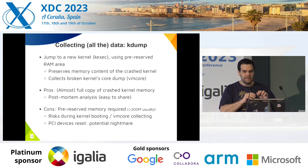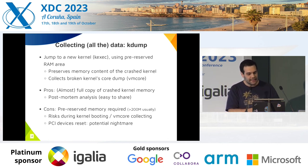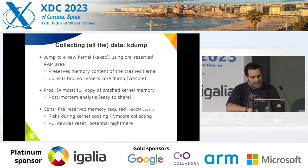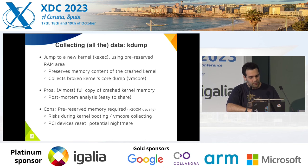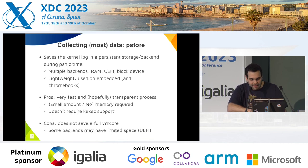K-dump is the first one. The broken kernel jumps to another kernel that collects the full memory of the first kernel. It can compress this memory image, cut the free pages, and so on. It's almost a full copy of memory, good for post-mortem analysis. But the main con is that it requires a bunch of pre-reserved memory — usually 200 megabytes for newer kernels. Also, there are risks booting the kdump kernel, PCI devices might be in bogus states, and there's no standard reset mechanism on x86.